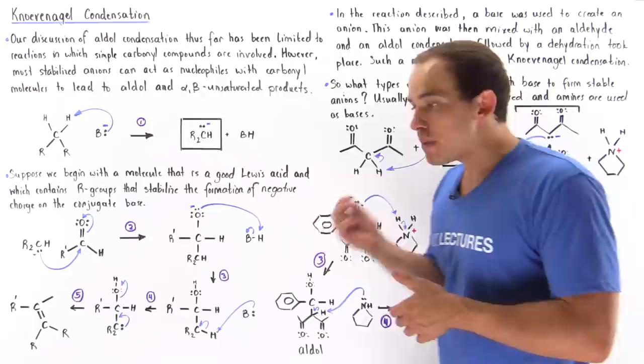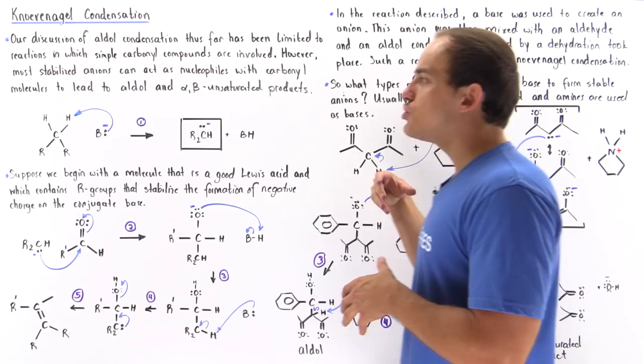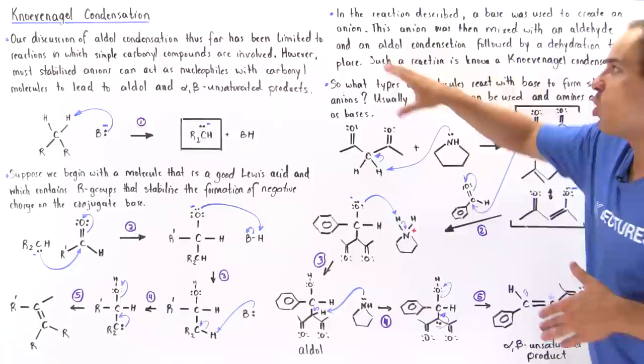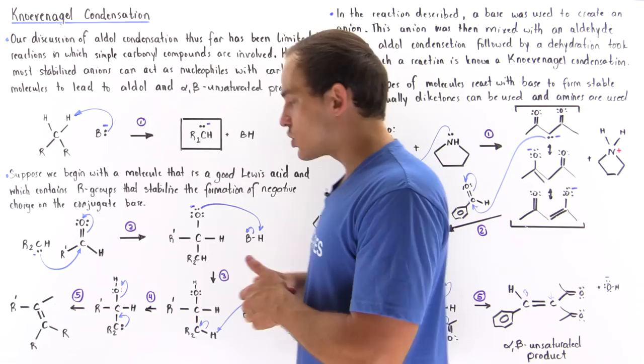We're going to examine a special type of reaction, a special case of an aldol condensation known as the covenangle condensation. So let's first take a look at the general reaction mechanism of the covenangle condensation. Then we're going to define exactly what the covenangle condensation is. And finally, we're going to look at a specific example of the covenangle condensation. So let's begin with our general reaction mechanism.